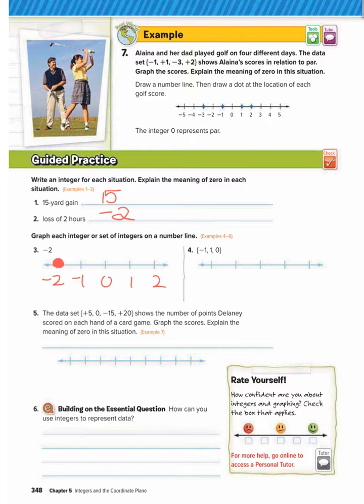Number four, we want to graph negative one, one, and zero. So again, I'm going to add some integers to my number line. I'm just going to number this. So negative one, I would put a dot at negative one. Positive one, I would put a dot at positive one. And put a dot at zero.